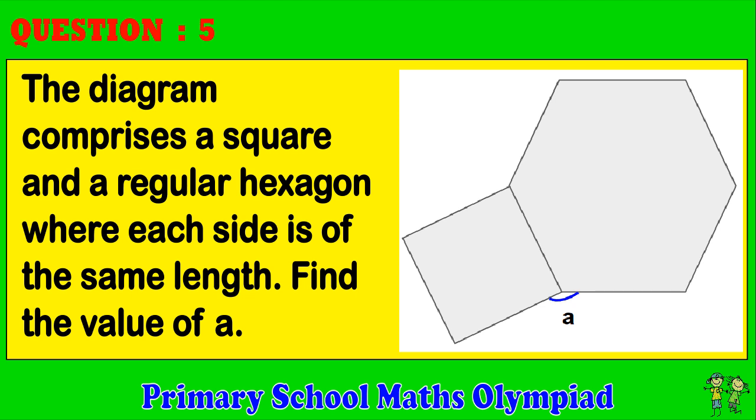Question 5: The diagram comprises a square and a regular hexagon, where each side is of the same length. Find the value of A.